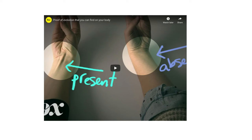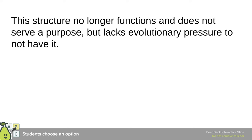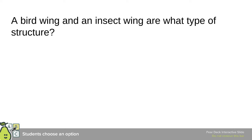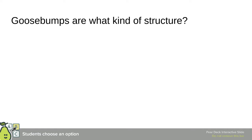I'll put a link here showing different variations in humans that are proof of evolution — basically vestigial organs. Now some review questions: This type of structure arises from a shared environment. This type of structure arises from a shared ancestry. This structure no longer functions and does not serve a purpose but lacks evolutionary pressure to remove it. A bird wing and an insect wing are what type of structure? A whale fin and a human hand are what kind of structure? Goosebumps are what kind of structure?